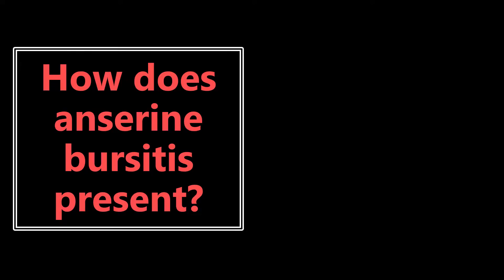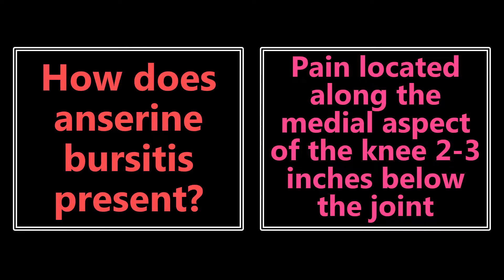First fact: how does anserine bursitis present? This is one of those orthopedic issues that we need to know. They may present a vignette describing the patient and you need to make the diagnosis. Anserine bursitis presents with pain located along the medial aspect of the knee about two to three inches below the joint. If you see a patient with those symptoms on the exam, you want to be thinking about anserine bursitis.